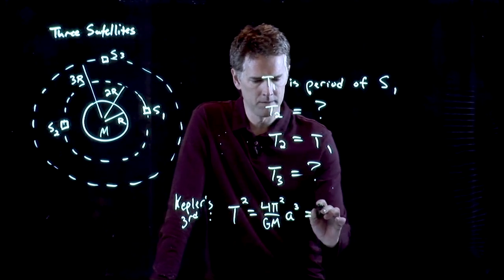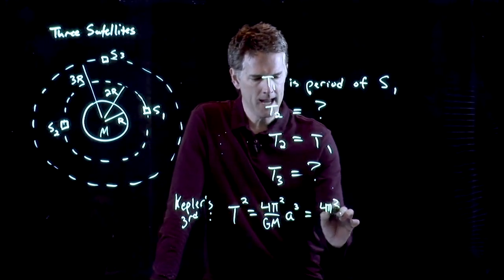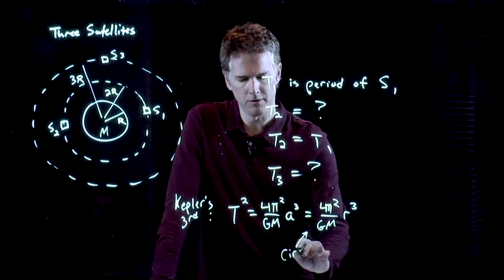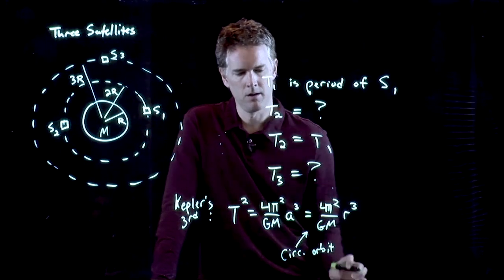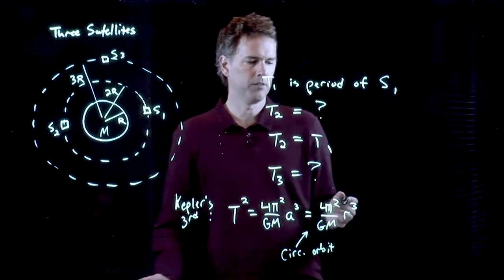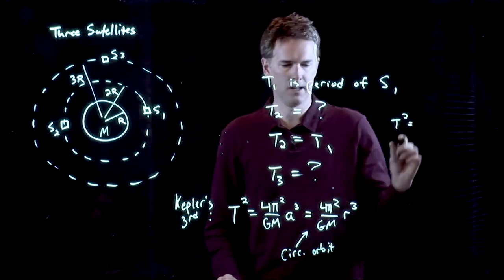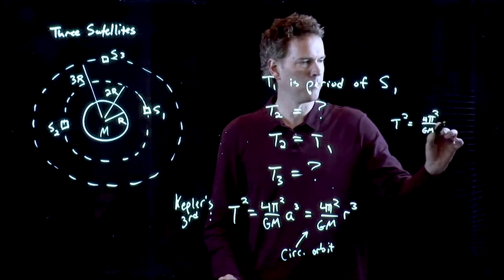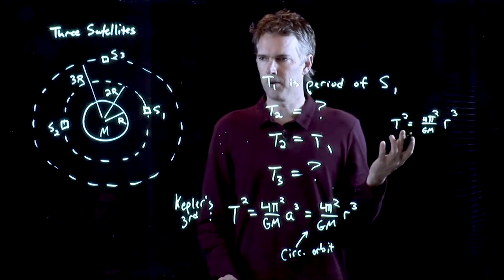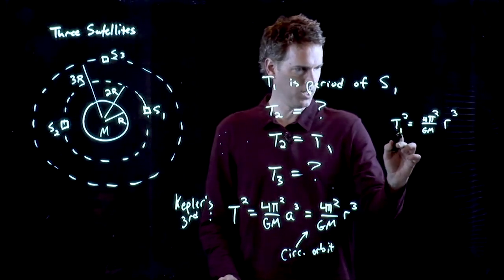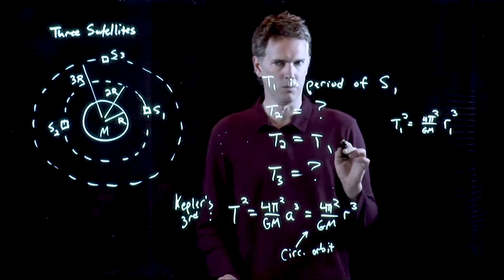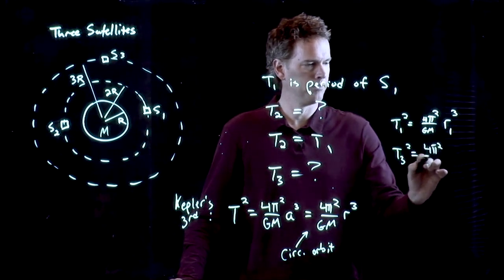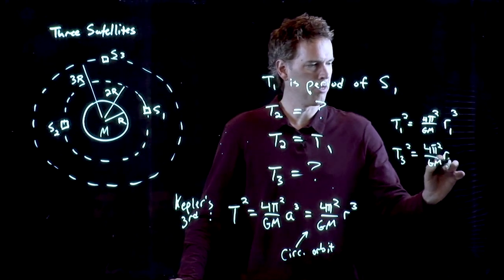But if it's a circular orbit, then A is just the radius. That step is if it's a circular orbit. And so now look what we can say. T² is just 4π²/GM times R³. And I can put any subscripts on that I want. T1² is this stuff R1³. T3² is this stuff R3³.